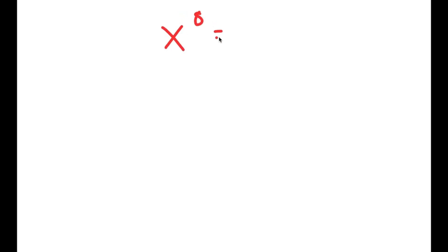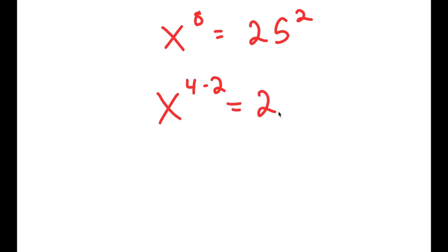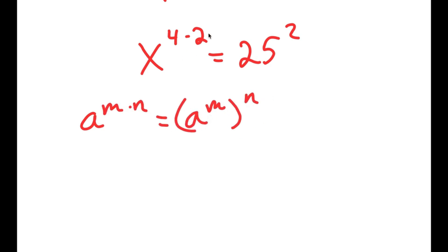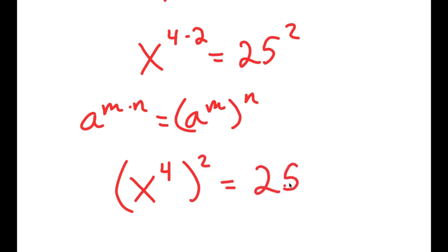In this video, I'm going to solve the equation x to the power of 8 equals 25 squared. To solve this, I'll rewrite x to the 8th as x to the power of 4 times 2. Using the property that a to the power of m times n equals a to the m to the n, this becomes x to the 4th, squared, equals 25 squared.